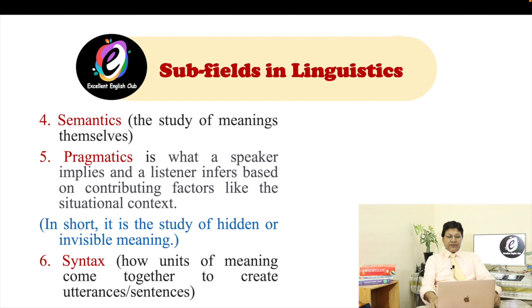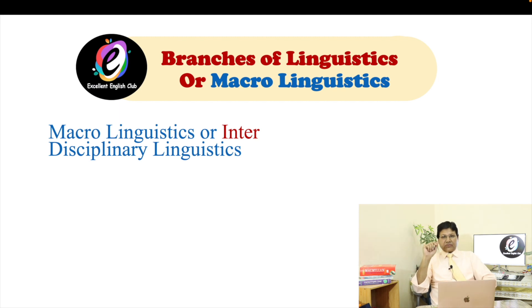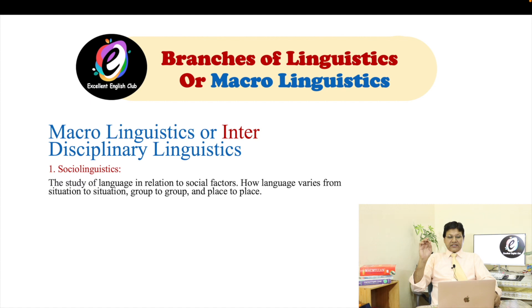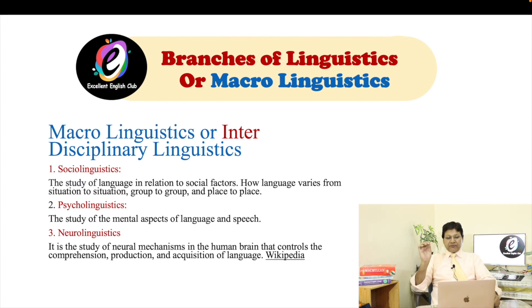Now we move to the different branches of macro linguistics, also called interdisciplinary linguistics. Number one: sociolinguistics — the study of language in relation to social factors; how language varies from situation to situation, group to group, or place to place. Number two: psycholinguistics — the study of mental aspects of language and speech. Number three: neurolinguistics — the study of neuromechanisms in the human brain that control the comprehension, production, and acquisition of language.